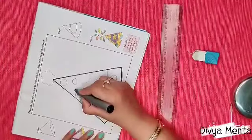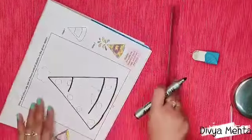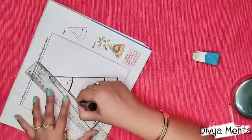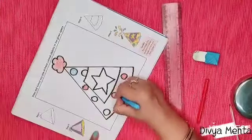So after completing the sketching part we will outline the picture. And after that we will color the picture.